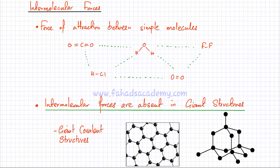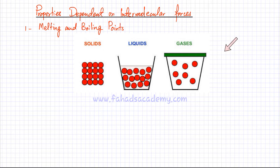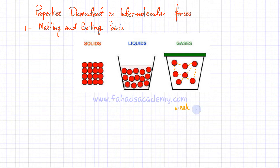We'll now discuss how simple molecules attract each other — whether strongly or weakly — and the properties that depend on intermolecular forces. The first property is melting and boiling points. If a substance exists as a gas, that suggests the particles have very weak intermolecular forces, shown by dotted lines, meaning they're not attracting each other strongly and can move freely in all directions.